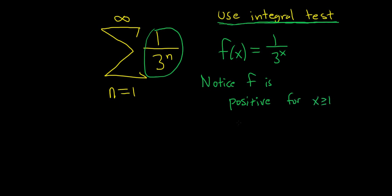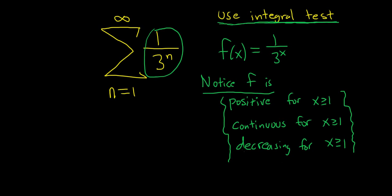Continuous, so continuous for x greater than or equal to 1. And the last one is decreasing, decreasing for x greater than or equal to 1. So again, depending on what you're doing this for, the amount of work required to verify these things could vary. So I usually just tell my students, you know, just state it. At least state the conditions. This one's really easy to verify. You could take the derivative and show that it is negative.